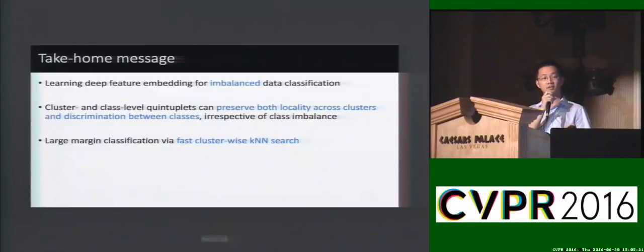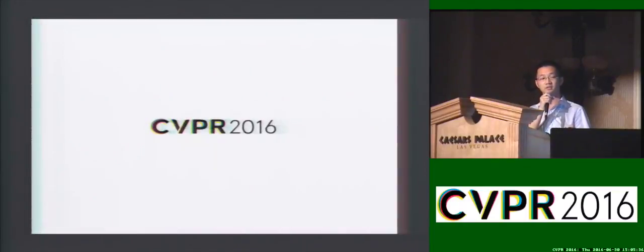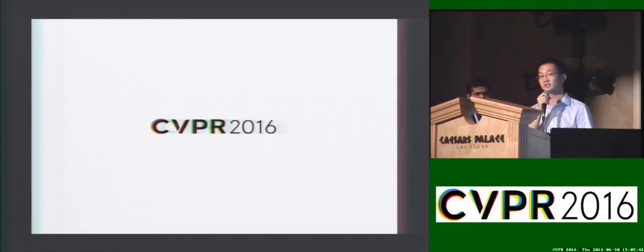In conclusion, we proposed a method to learn the feature embedding for imbalanced classification. We better sample the cluster and class-wise quintuplets to preserve both the locality across clusters and discrimination between the classes. We perform classification using the class-wise KNN search. Thank you very much.